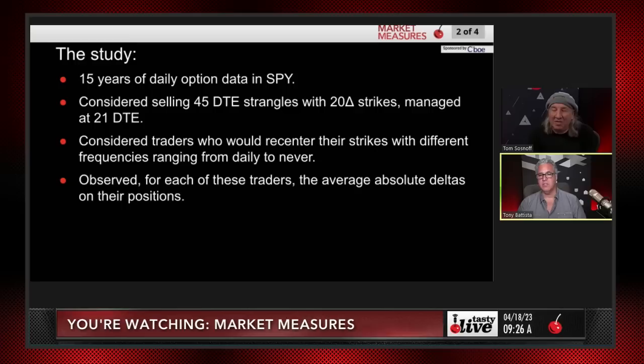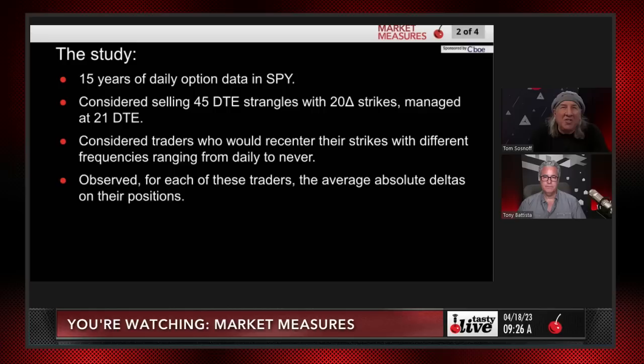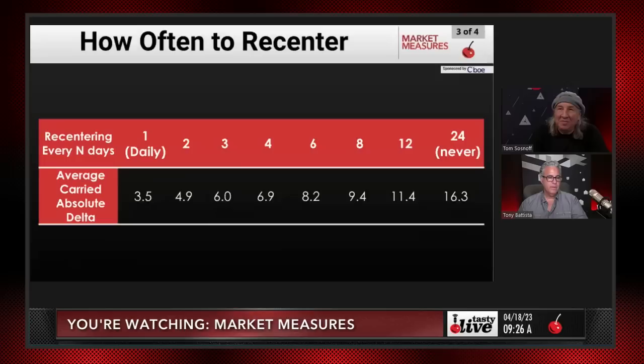We get these questions all the time on confirm-and-send and in emails: should I have 8 deltas, should I roll today, I have 2 deltas should I roll, I have 40 deltas should I roll? So we considered traders recentering with frequencies ranging from daily to never — every 1, 2, 3, 4, 6, 8, 12, and 24 days — and observed the average absolute deltas on their positions.